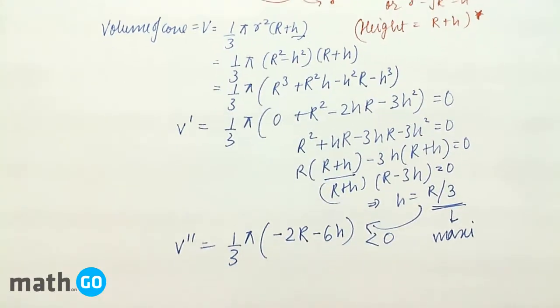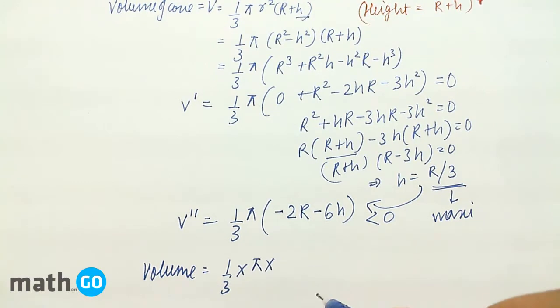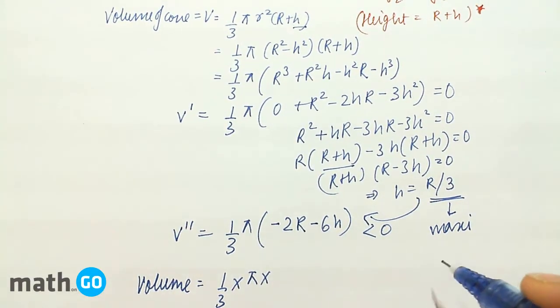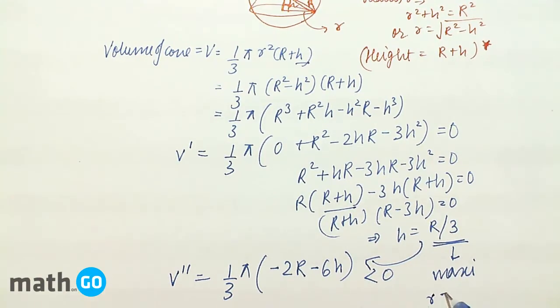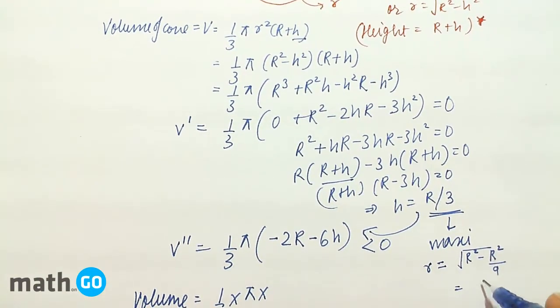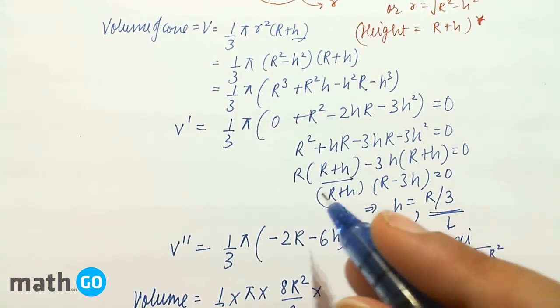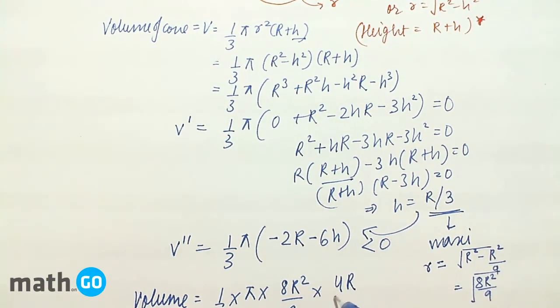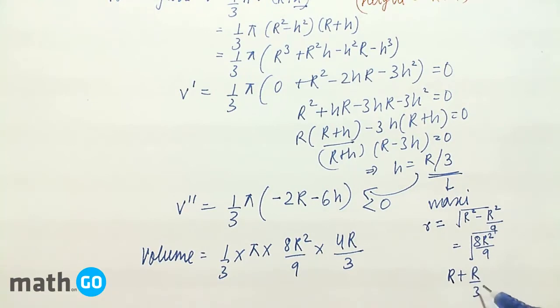So this will give the volume of the cone to be 1/3 × π × r². Now, what is the value of r? r we had root of R² minus h². So if we put the value we will get r equals to root of R² minus R²/9. This will come out to be root of 8R²/9. Here we have to put the value of r², so it will simply be 8R²/9 into R + h. That is nothing but 4R/3. This is R plus h, R + R/3, that is 4R/3.